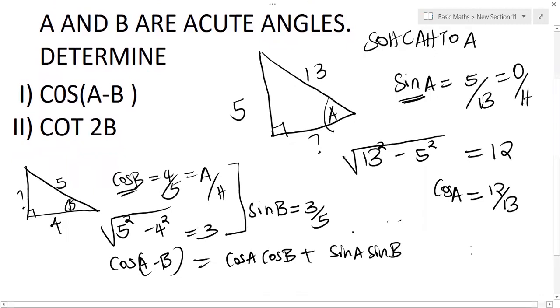So coming to replace these values here, we're going to have cos A which is 12 over 13 multiplied by cos B which is 4 over 5, plus sin A which is 5 over 13 multiplied by sin B which is 3 over 5. So we can multiply and get our value there.